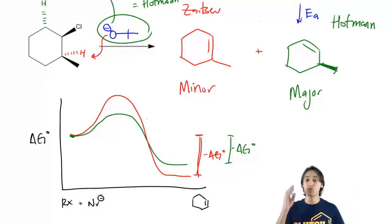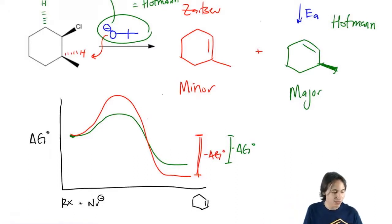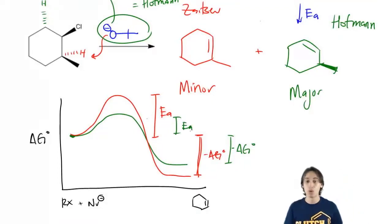The red one is overall more stable than the green. But what we're also going to notice is that the activation energy of the first one is much higher and the activation energy of the second one is much lower.